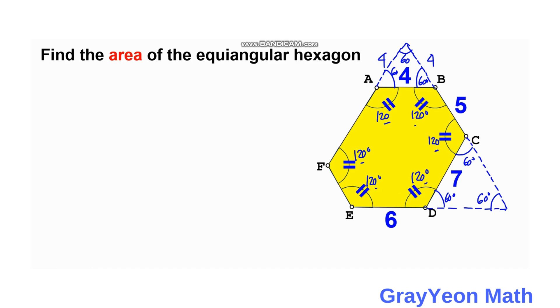Going back to the first equilateral triangle, this side becomes 7 and this also becomes 7. So the total side length is 5 plus 4 equals 9, plus 7, giving 16.